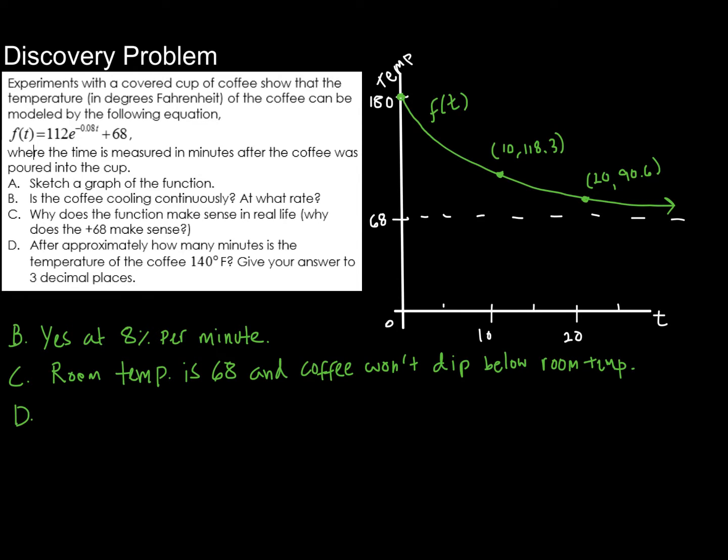Alright, now our goal is to find out how many minutes is the temperature of the coffee, is it going to take for the temperature of the coffee to reach 140 degrees Fahrenheit. Give your answer to three decimal places. Alright, so there is a couple ways that we can tackle this. The first is we can say to ourselves, okay, let's look at the graph, and let's try and estimate where the graph is going to have a y value of 140.